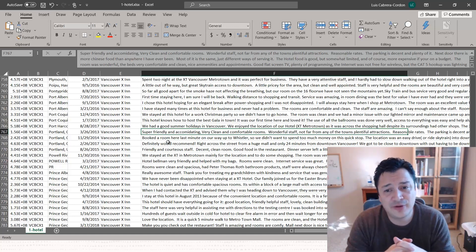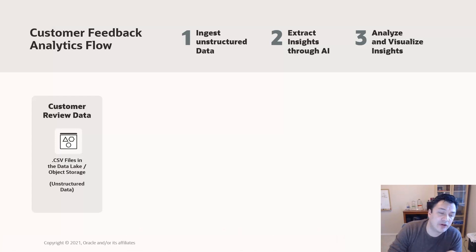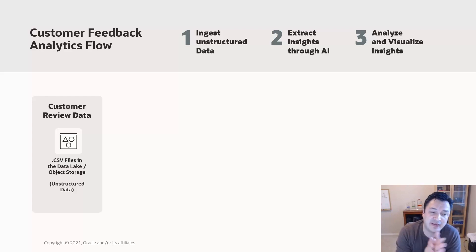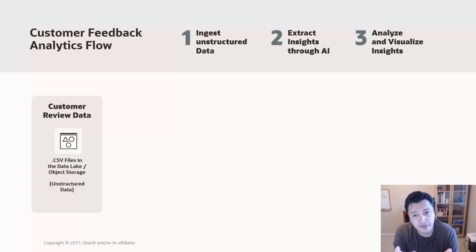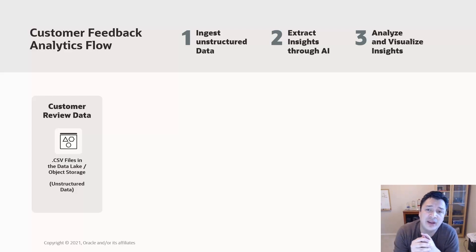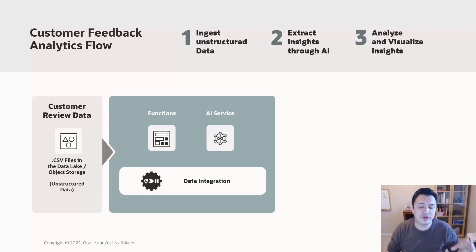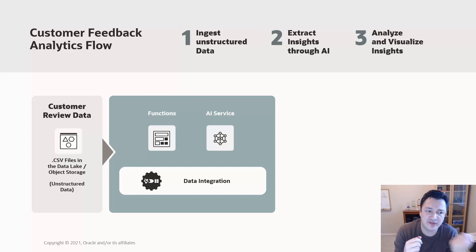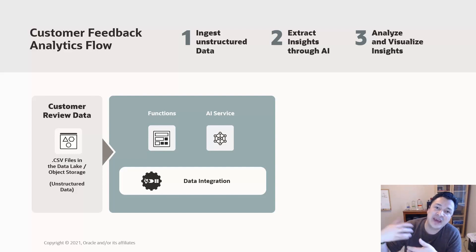We want to use this information to improve our product, but there is just so much of it. So we're going to take the data that is in a structured format — in this case a CSV file or a set of CSV files in the data lake or object storage — and we need to ingest the information, extract insights out of that information, and then analyze and visualize the insights we extracted. For that, we're going to use Data Integration as our master orchestrator, which will be able to ingest information from our data source and call our AI services.